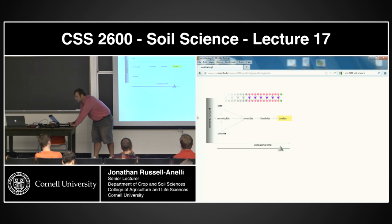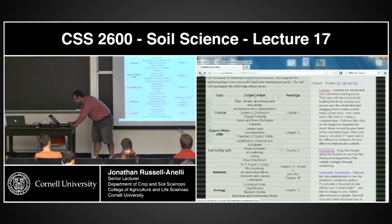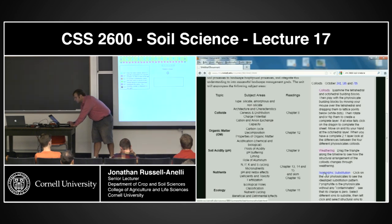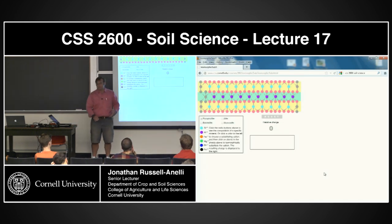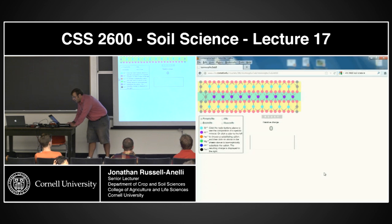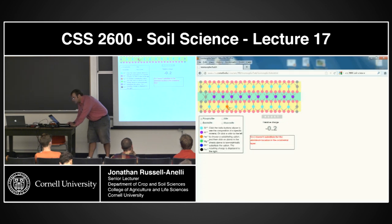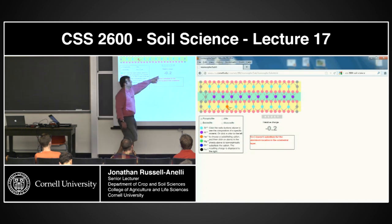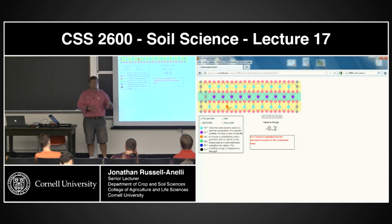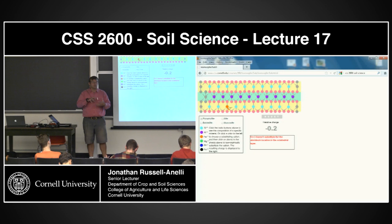As you slide the weathering down, you can see the change in isomorphic substitution and the actual weathering of the material itself. The last one is isomorphic substitution, and this gives you an idea about the charge balance. We're going to be talking about this today. If you take an ion — let's take iron — and swap it in for somebody, it'll tell you if you can or can't do it, and if you can, it'll tell you the change in relative charge.